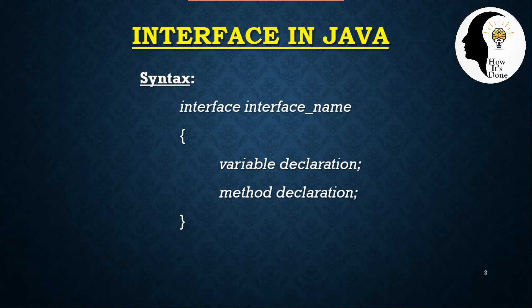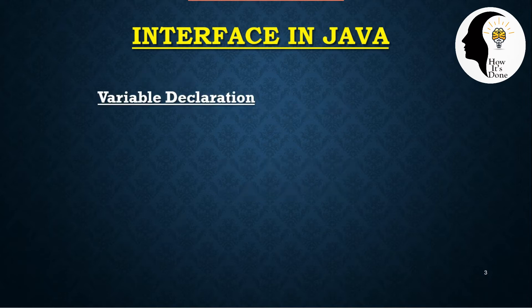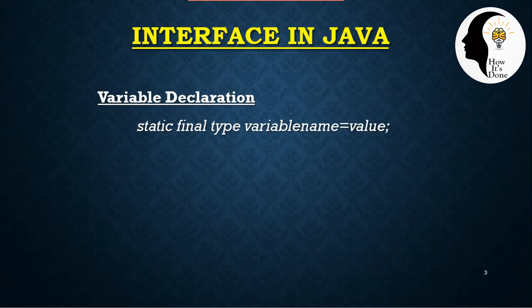The variable declaration is static final: type variable_name = value. Similarly, the method declaration follows the same static final pattern: type variable_name = value.